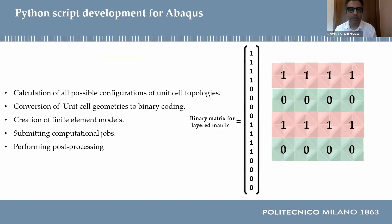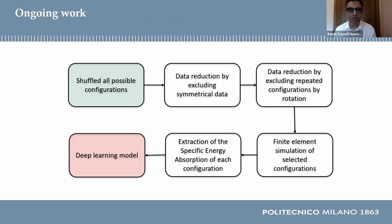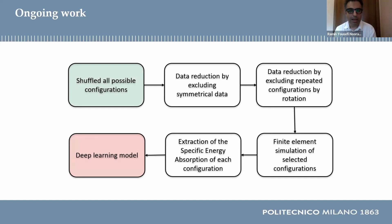A Python script was developed to implement tasks at different stages: calculation of all possible configurations of unit cell topologies, conversion of unit cell geometries to binary coding, creating finite element models for heterogeneous lattice structures, submitting computational jobs, and performing post-processing. The number of dataset configurations will be reduced to prevent excessive computational cost, while considering optimal structural symmetry and excluding repeated configurations by rotation. The selected candidates will be referred to a multi-objective surrogate panel model as a training dataset.